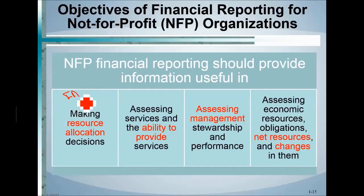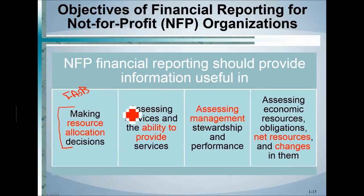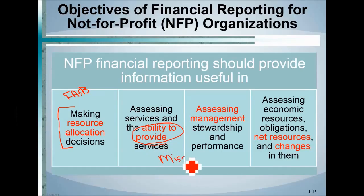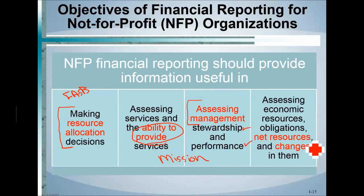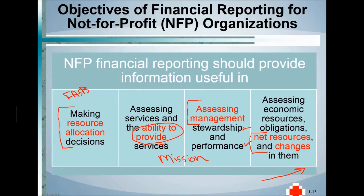For not-for-profit reporting, FASB is involved rather than GASB. The objectives are: ensuring resources are allocated correctly; determining whether the organization can provide its services and fulfill its mission; assessing management's stewardship and performance; accountability; and tracking net resources and changes in them — whether the organization is trending upward and growing or trending downward and not financially healthy.